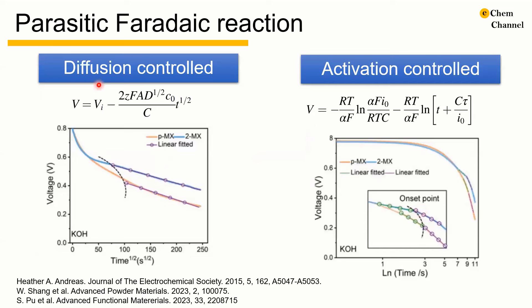The type of rate-limiting process depends on the concentration of the reacting species. Self-discharge reactions limited by diffusion exhibit a linear drop in potential when plotted versus the square root of self-discharge time, following this equation. In this equation: Vi represents initial voltage, Z is charge, F is the Faraday constant, A is surface area, D is diffusion coefficient, C0 is initial concentration, and T is time.